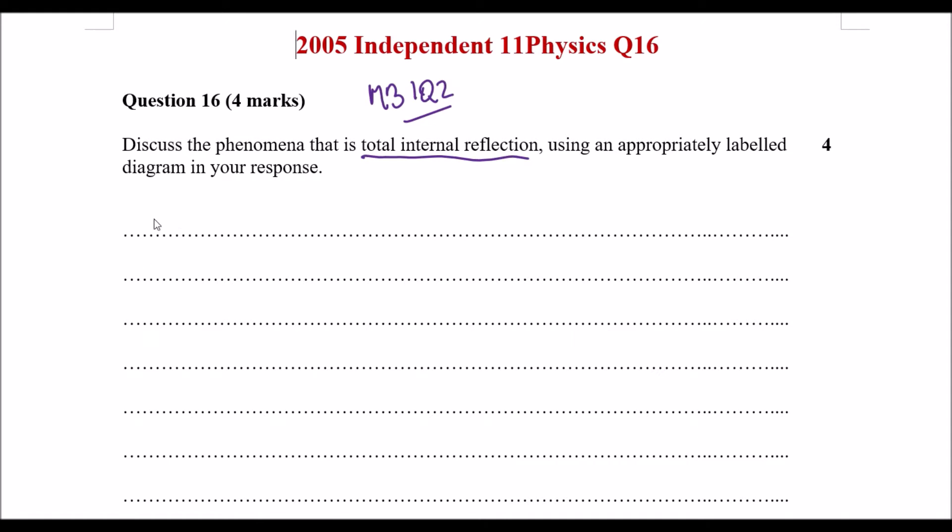So in terms of total internal reflection, just to put things straight, or draw a diagram, when total internal reflection occurs we have light that usually when it goes from one medium to another, so this is our interface. Usually say for example if we have air and then we have water.